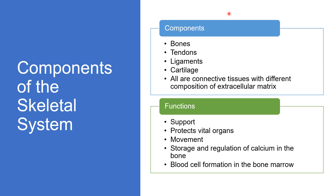Starting with bones, they are a type of connective tissue that are composed of cells and extracellular matrix consisting of collagen fibers and minerals such as calcium and phosphorus. Bones provide support and shape to the body, protect vital organs such as the brain and heart, and serve as an attachment site for the muscles.